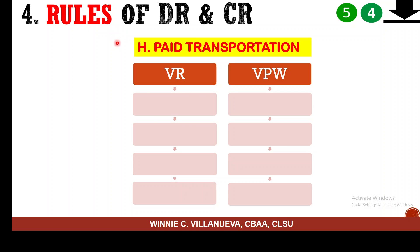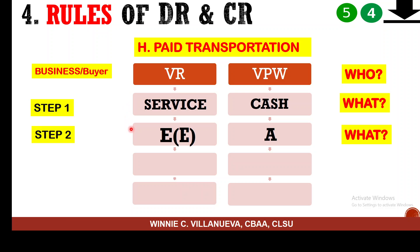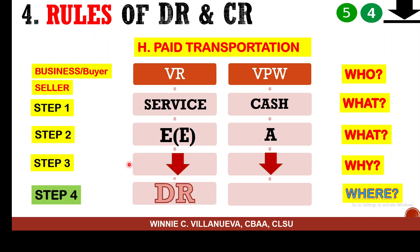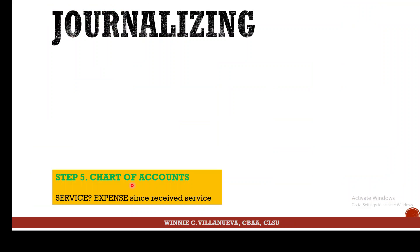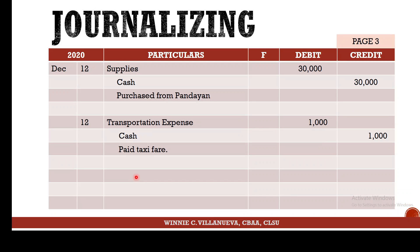Another transaction: you paid transportation fare — you received a service, which is an expense. Every time you receive a service, it is an expense, which decreases your equity. So it is debited. The credit is the cash given out. Transportation Expense is debited; Cash is credited. Amount: 1,000. This is how your page 3 should look — 30,000 for supplies purchased on cash and the transportation expense.